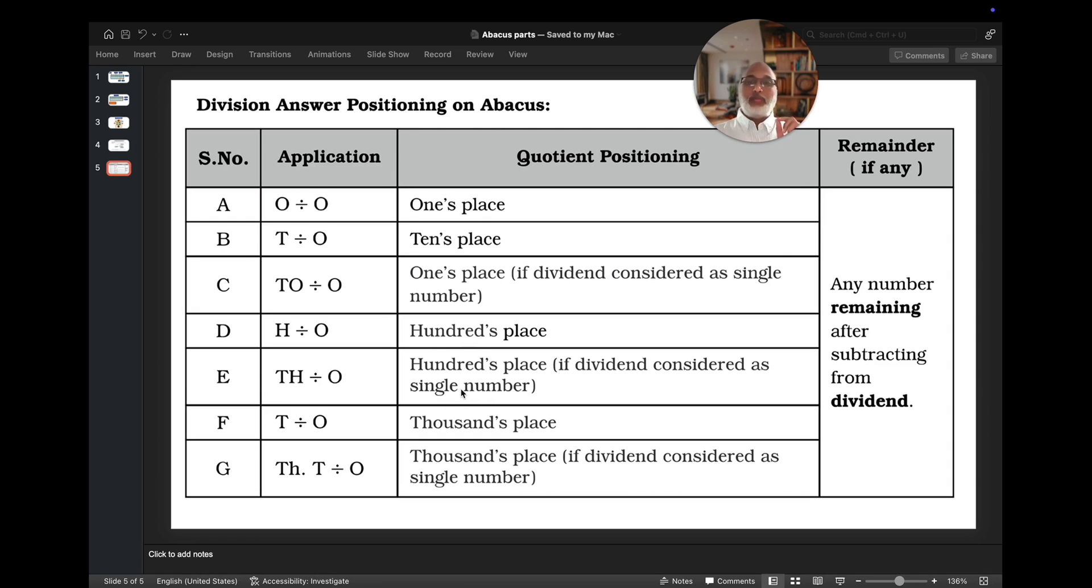You have to remember one thing in division. If you are doing divisions with two-digit number, you have to place the quotient in a least denomination place. For example, if you see, if you are division of hundred's place and thousand's place, what is the least denomination over here? Hundred's place. You have to place the answer in hundred's place only.